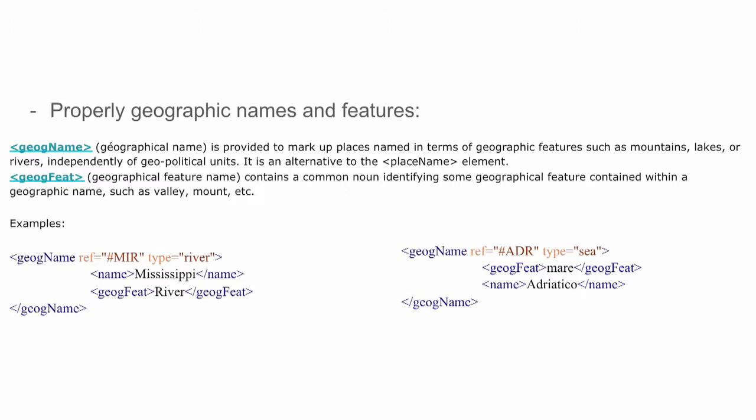Speaking of the Mare Adriatico, the Adriatic Sea, Geog feat will encode Mare and the name will be simply Adriatico, all of that wrapped into a Geog name element.